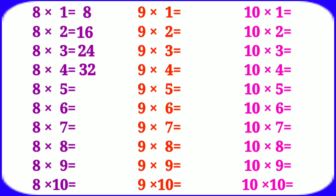8 fives are 40, 8 sixes are 48, 8 sevens are 56, 8 eights are 64, 8 nines are 72.